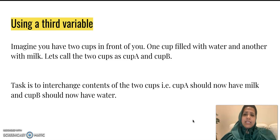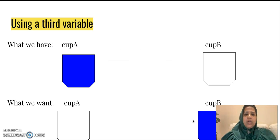Now our task is that we have to interchange the contents of both the cups. So by the end of the code, cup A should have milk, whereas cup B should be having water. Let's see how we can do this. So here we have cup A, which is filled with water, and cup B, which is filled with milk. What we want, cup A should be filled with milk and cup B should be filled with water.